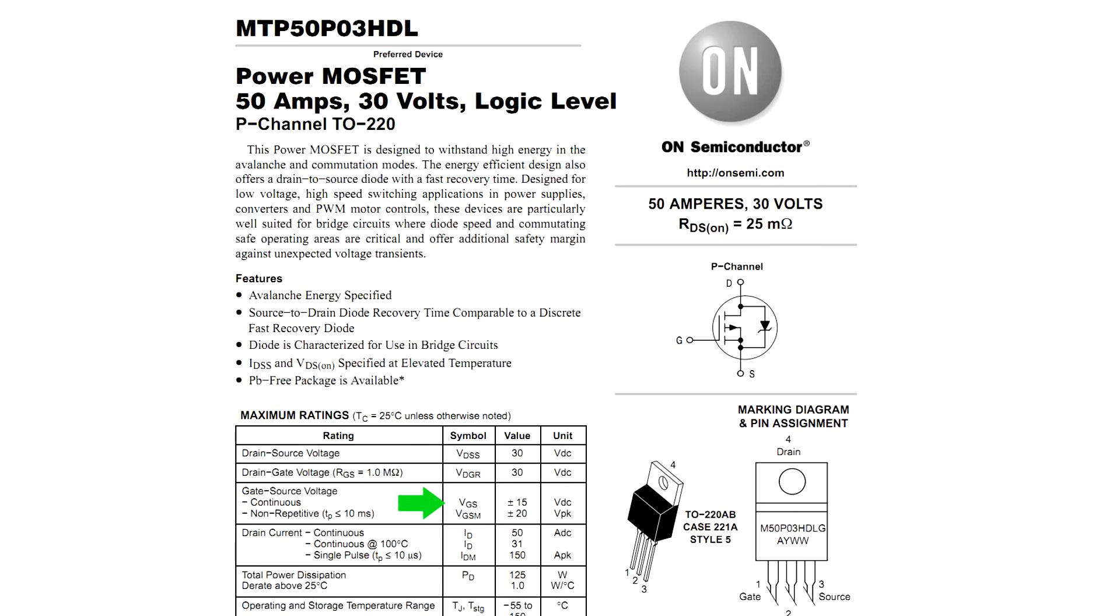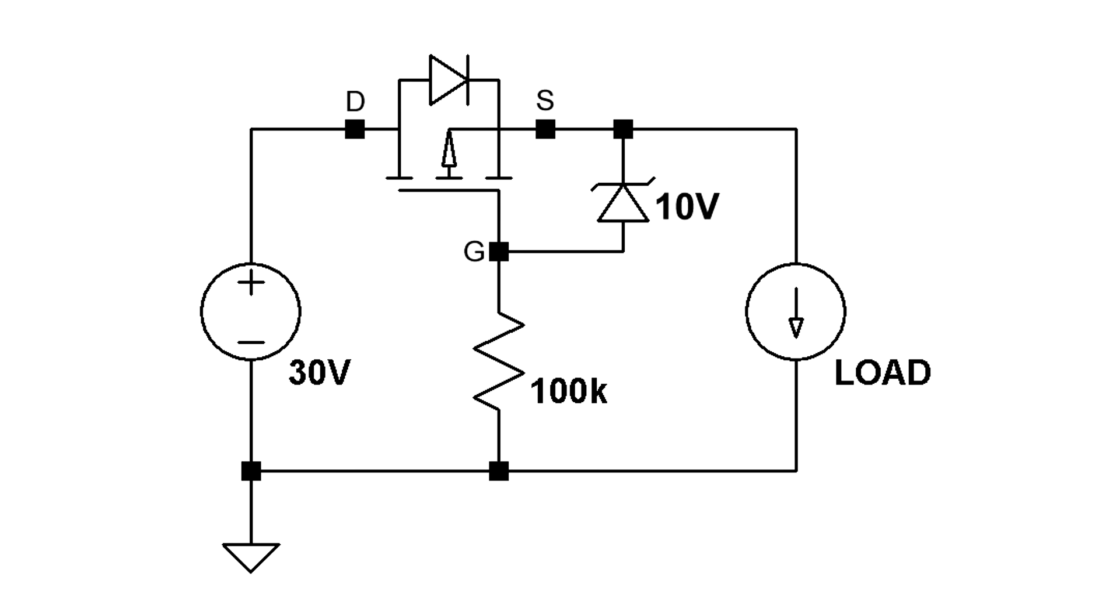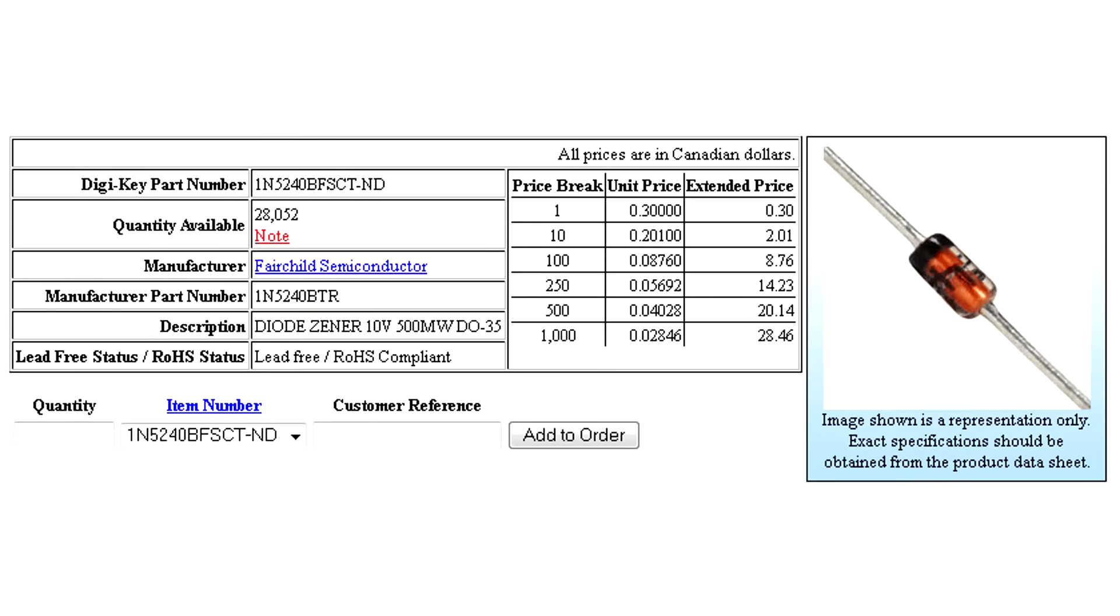So here's how you can get the PFET to work with a higher voltage input. Let's say our input voltage is exactly 30 volts now. If we add a resistor and a 10 volt zener diode to the circuit, now we can clamp the gate source voltage to a maximum of minus 10 volts. So now the transistor is safe. Something like this 1N5240 would do the trick. It doesn't have to be exactly a 10 volt zener diode, something in the 6 volt to 12 volt range would probably be fine depending on the MOSFET.